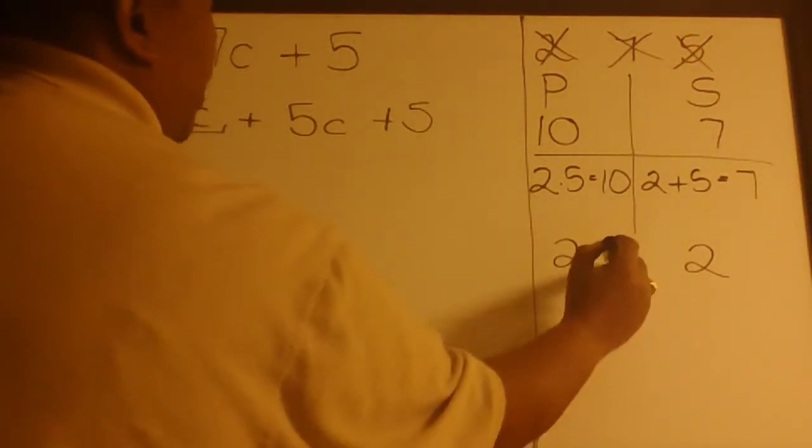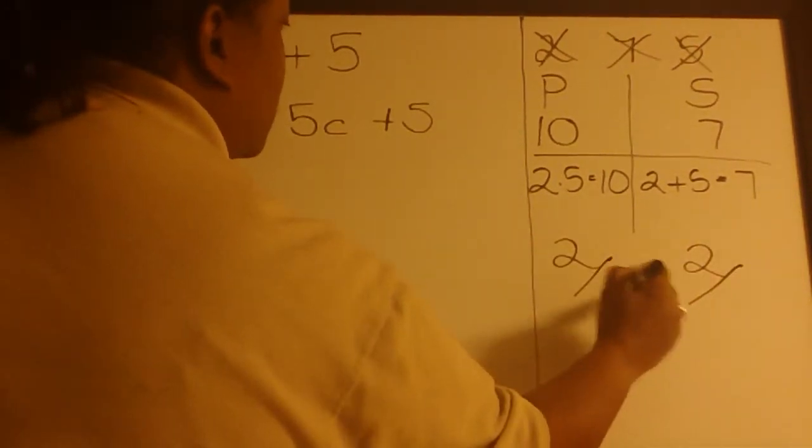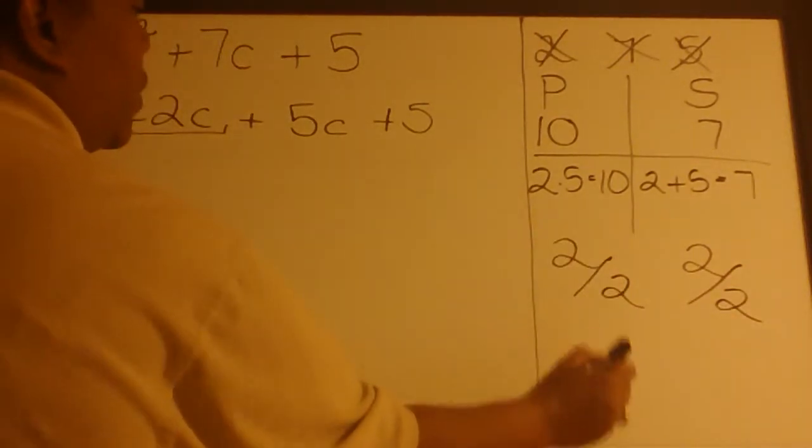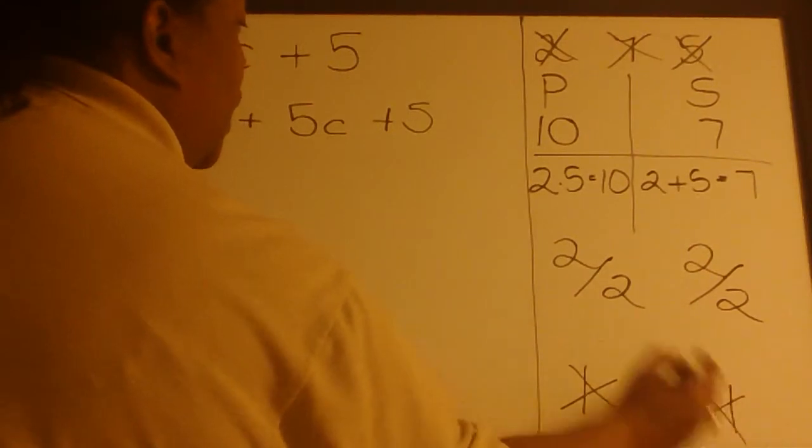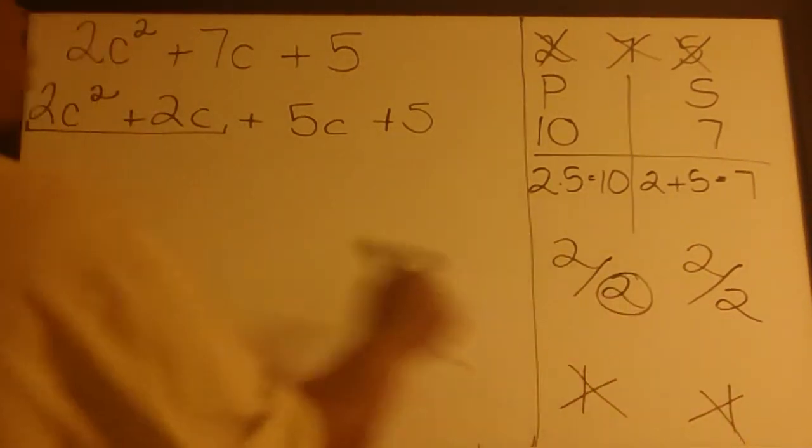But if you want to go this route, we can divide both of those by 2. 2 divided by 2 is 1. This is our stopping point, and our GCF will be 2C.